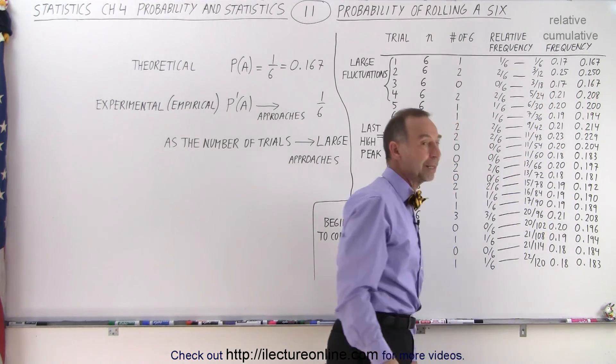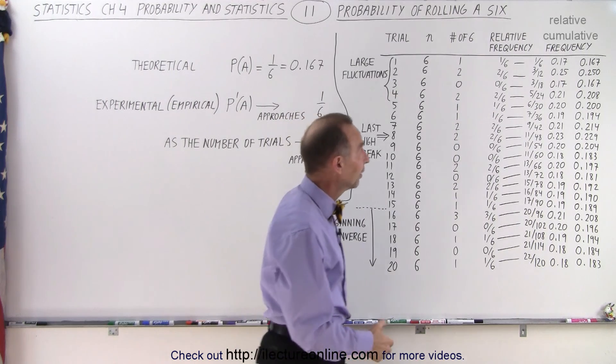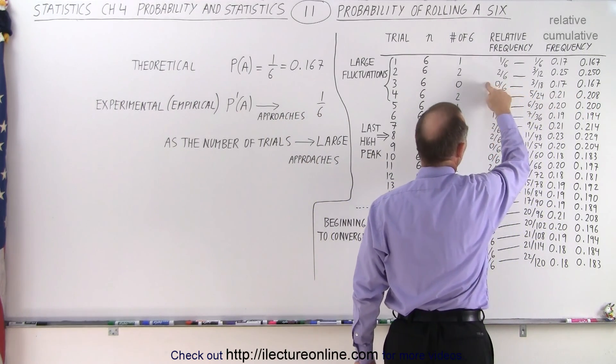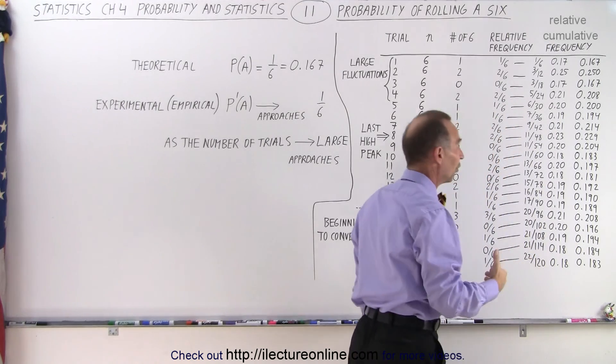So now our theoretical probability increased to 0.25. Then it dropped back down to 0.167 because on the next trial we had zero sixes and so forth.